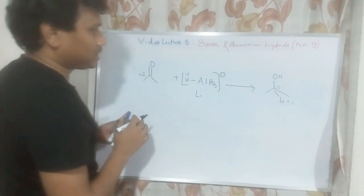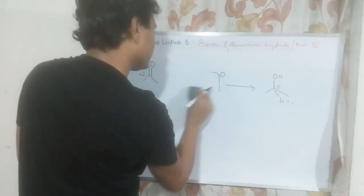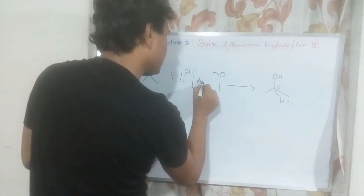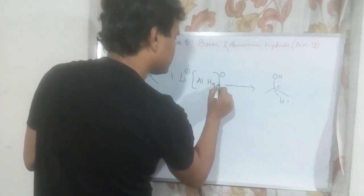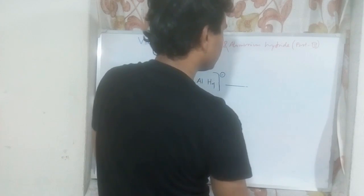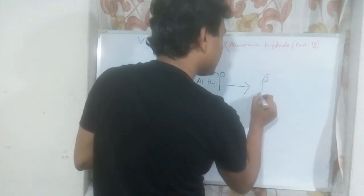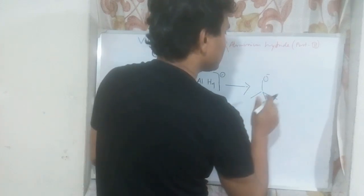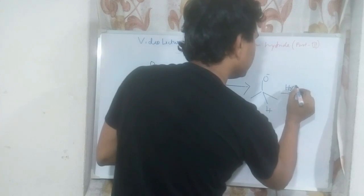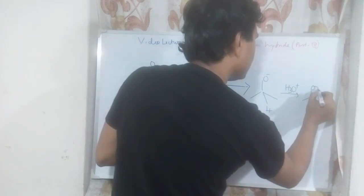Let's write the equation in a slightly different way. Acetone plus Li⁺AlH4⁻ initially produces an alkoxide O⁻ intermediate, and ultimately, in the presence of acid workup (H3O⁺), it produces the corresponding alcohol.